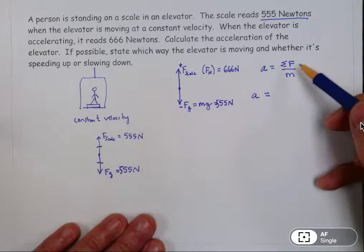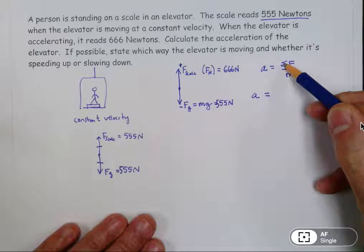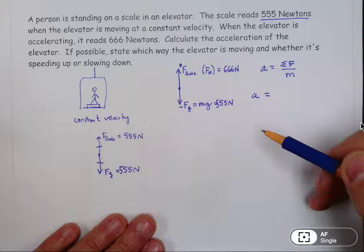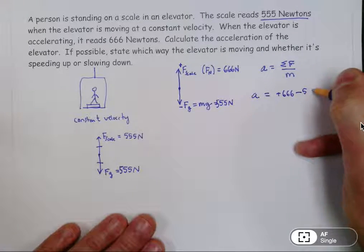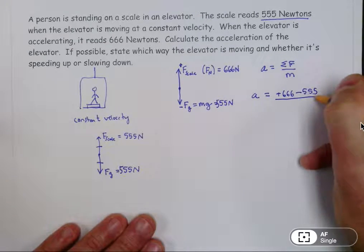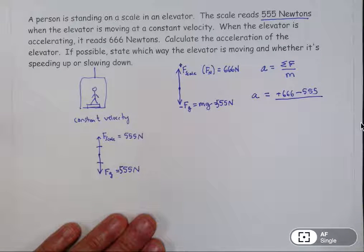So now I can apply this equation. I can add up the forces in the picture. There's a positive 666. There's a negative 555. And then to get the answer, I have to divide by mass. Again, we weren't given mass. But here's where, very frequently in these problems, you're going to use this equation.